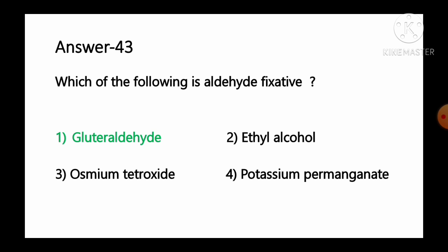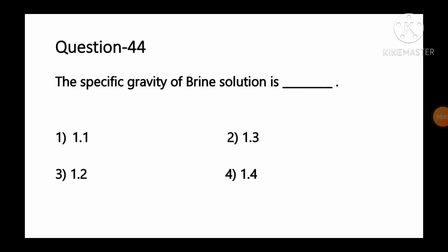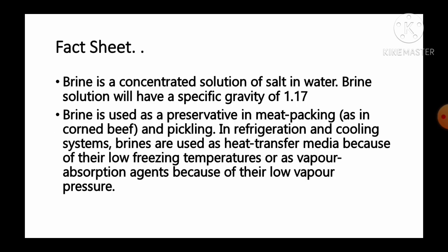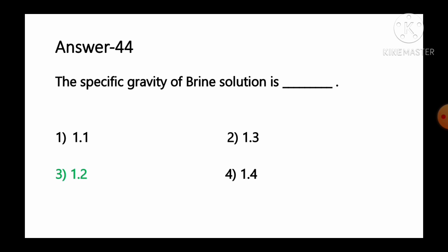Question number 44: The specific gravity of brine solution is — option 1 1.1, option 2 1.3, option 3 1.2, option 4 1.4. Brine is a concentrated solution of salt in water, with a specific gravity of approximately 1.17. Brine solution is used as a preservative in meat packing and pickling, in refrigeration and cooling systems, and as a heat transfer medium. So option number 3, approximately 1.2, is the correct answer.